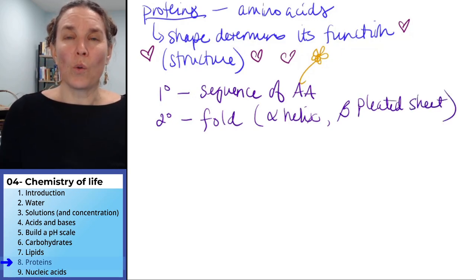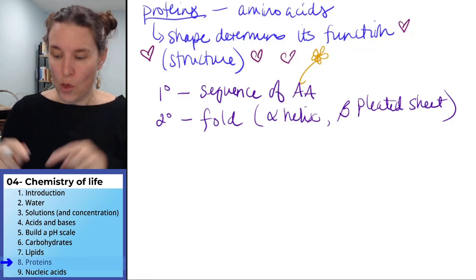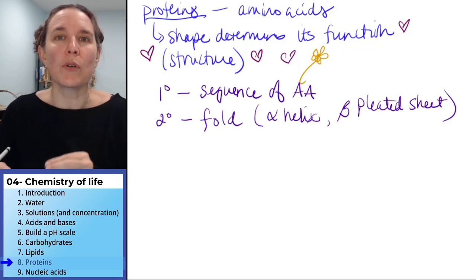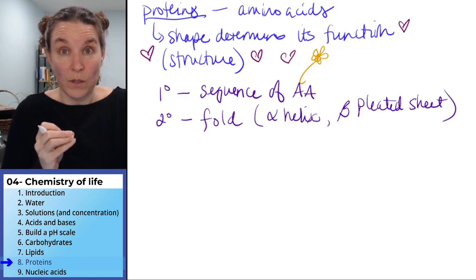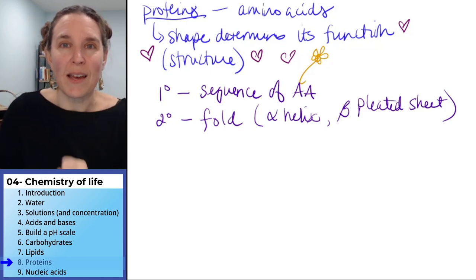I'm just going to write alpha helix or beta pleated sheet. That doesn't mean a whole lot to me, except those are some examples of the ways that that sequence of amino acids can fold to create that secondary structure.